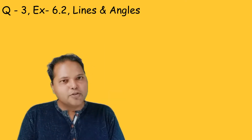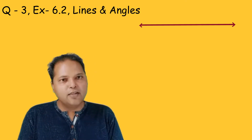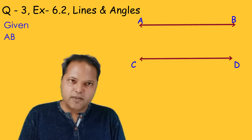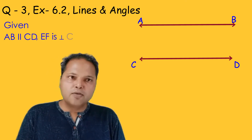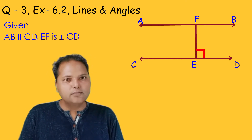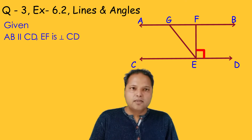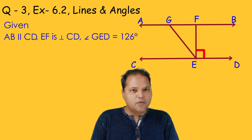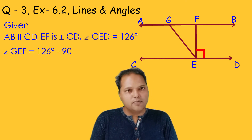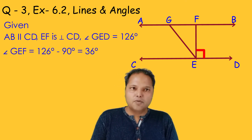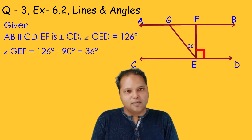Question number 3. We have lines such that AB is parallel to CD, and line EF is perpendicular to line CD. It is given that angle GED is equal to 126 degrees. We can find angle FEG as 126 minus 90 degrees, which equals 36 degrees.